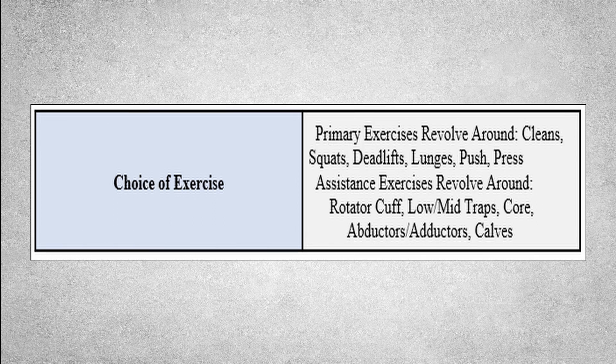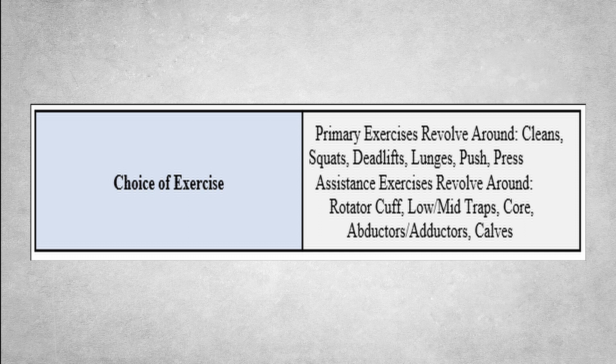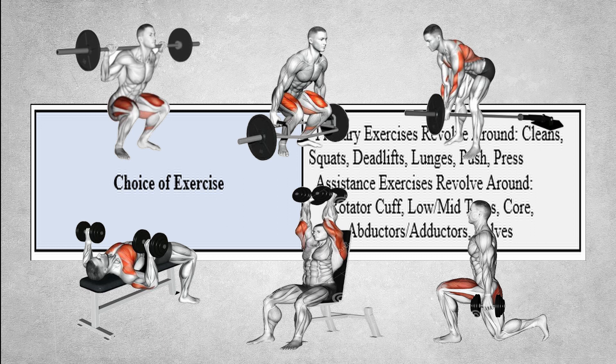Moving on to the topic of choice of exercise. The main thing to know is that while there are a million exercises out there, they fall into one of two categories: primary exercises and assistance exercises, and there's a very finite number of primary exercises. Most people will agree that primary exercises at the very least include squat variations, deadlift variations, multi-directional lunges, pull exercises or back rows, and pressing exercises such as chest presses and shoulder presses. Anything that doesn't fall under the category of a primary exercise is by definition an assistance exercise.